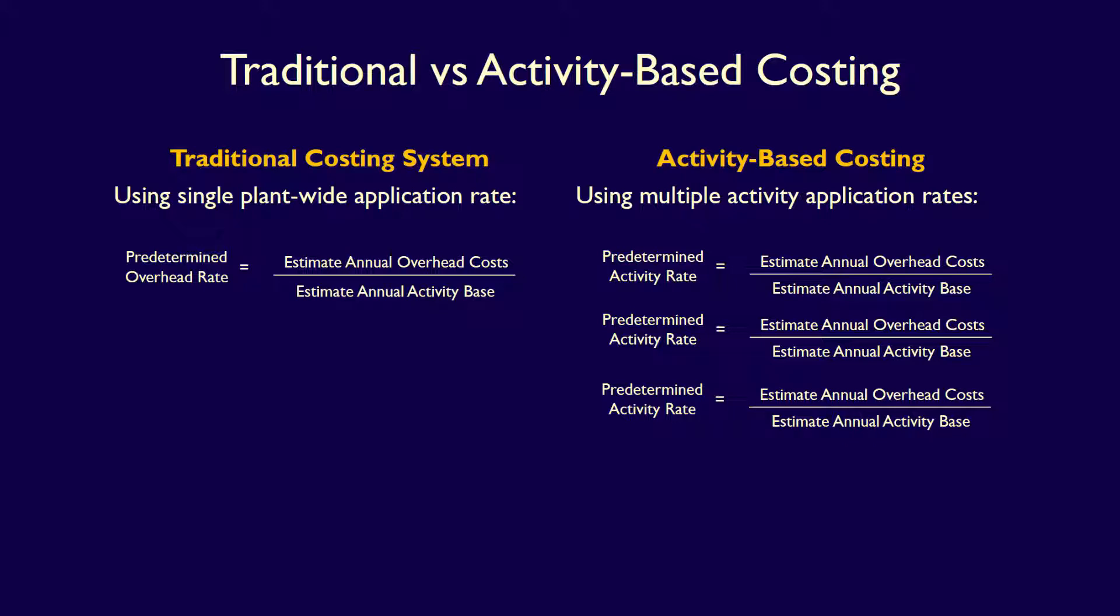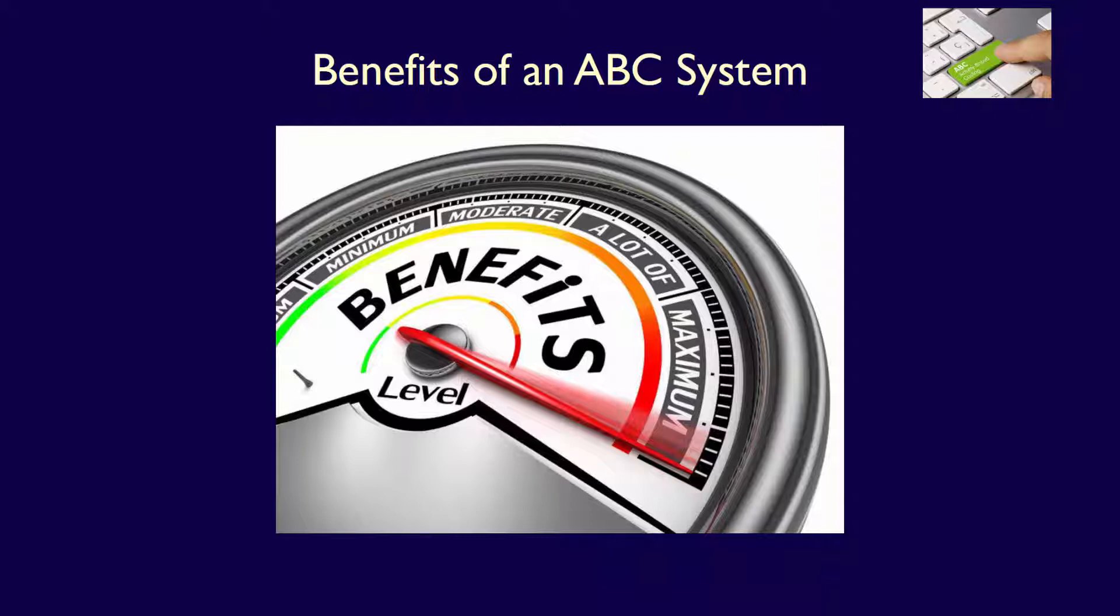Each activity rate is calculated using its own activity base, which is correlated to the costs within the activity cost pool. What are some of the benefits of an activity-based costing system?